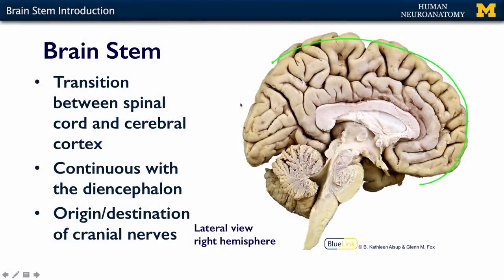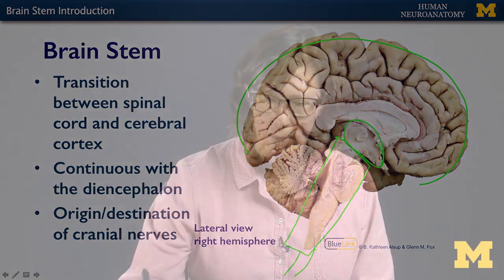In this set of lectures we're going to talk about the brainstem and then we'll talk about the cranial nerves. The brainstem is this transition area between the spinal cord and the cerebral cortex. Here is our beautiful cortex up here and out of the plane down here is our spinal cord, and so this large area here is our brainstem. It's continuous with the diencephalon and it is the origin or destination — depending on whether you're afferent or efferent information — of all of your cranial nerves.